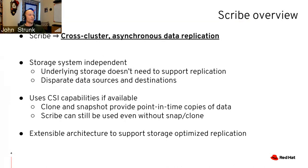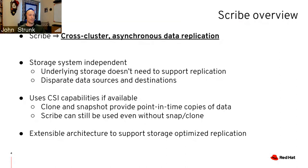Scribe uses CSI capabilities — clones and snapshots — when available to create point-in-time copies of your data for replication. If your storage driver doesn't support those, Scribe can still copy your data without them. Scribe is also designed around an extensible architecture, so if a storage system supports optimized replication natively, it can be integrated with Scribe.